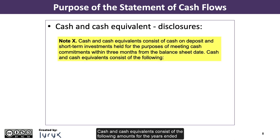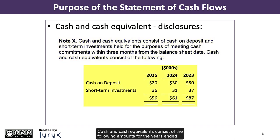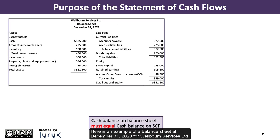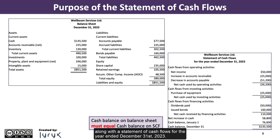Cash and cash equivalents consist of the following amounts for the years ended 2023, 2024, and 2025. Here is an example of a balance sheet at December 31, 2023 for Wellborn Services Ltd., along with a statement of cash flows for the year ended December 31, 2023.